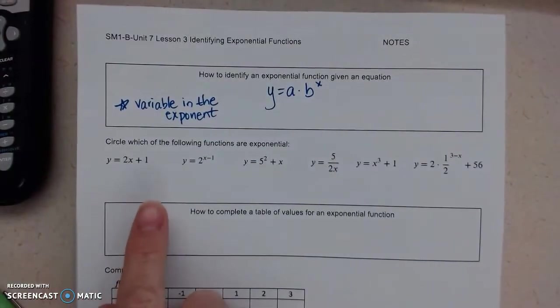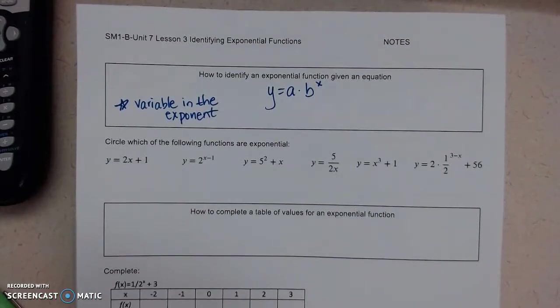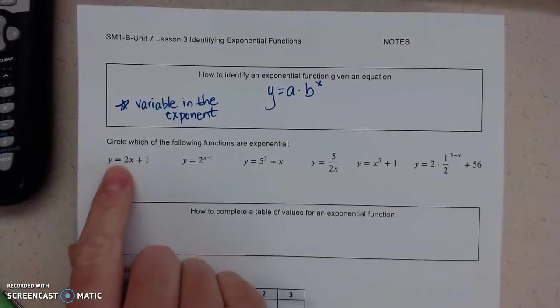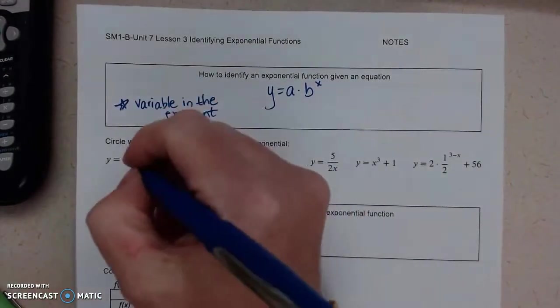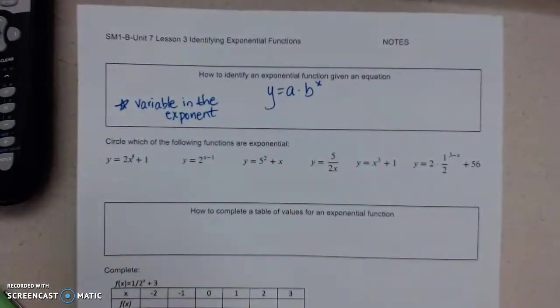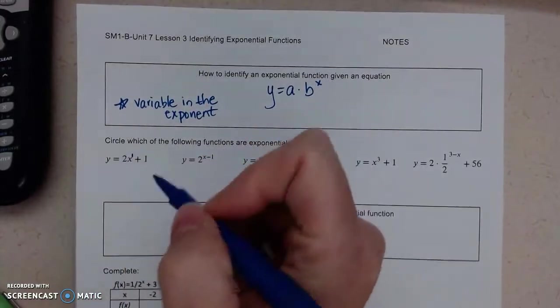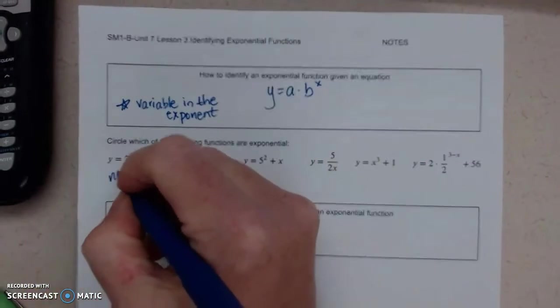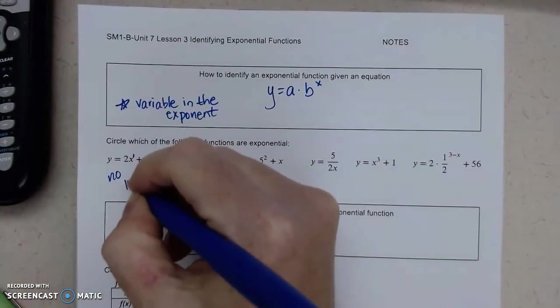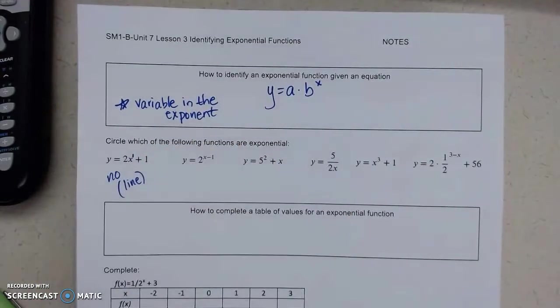So let's look at our examples. Which of the following functions are exponential? We've got y equals 2x plus 1. This is like x to the first, and you'll notice we don't have any exponents, so this is not exponential. It's actually a line. Next example: y equals 2 to the x minus 1. I've got a base number and I have an x in the exponent. The minus 1 moves it left and right, but that's irrelevant. This is exponential.